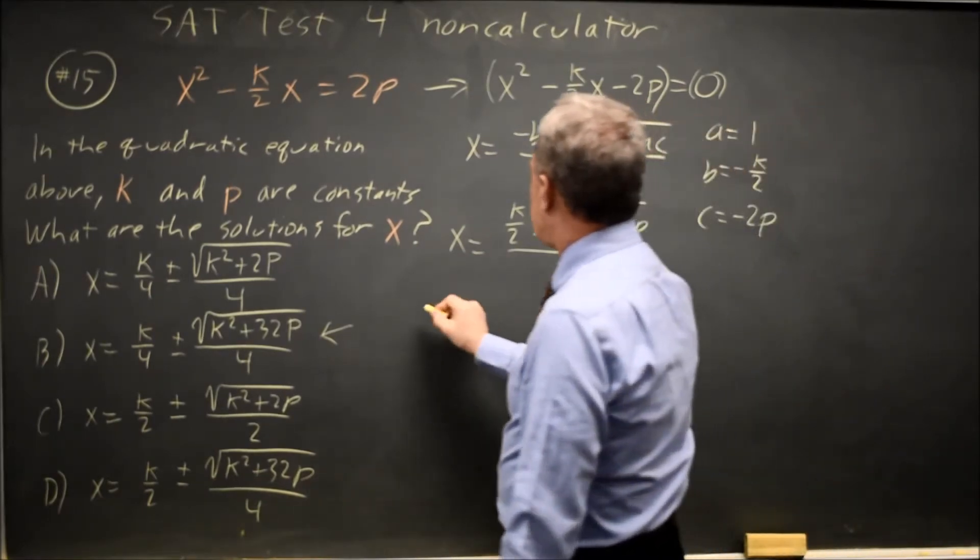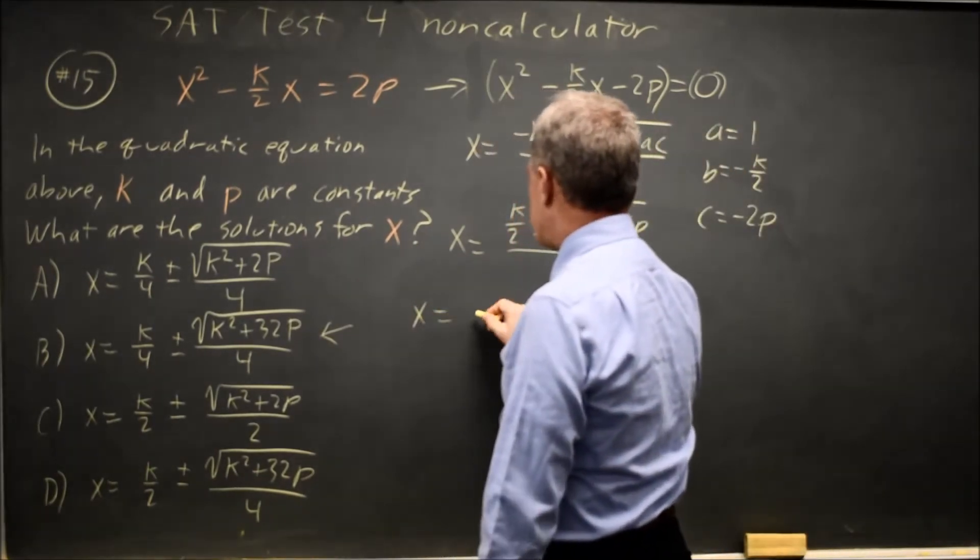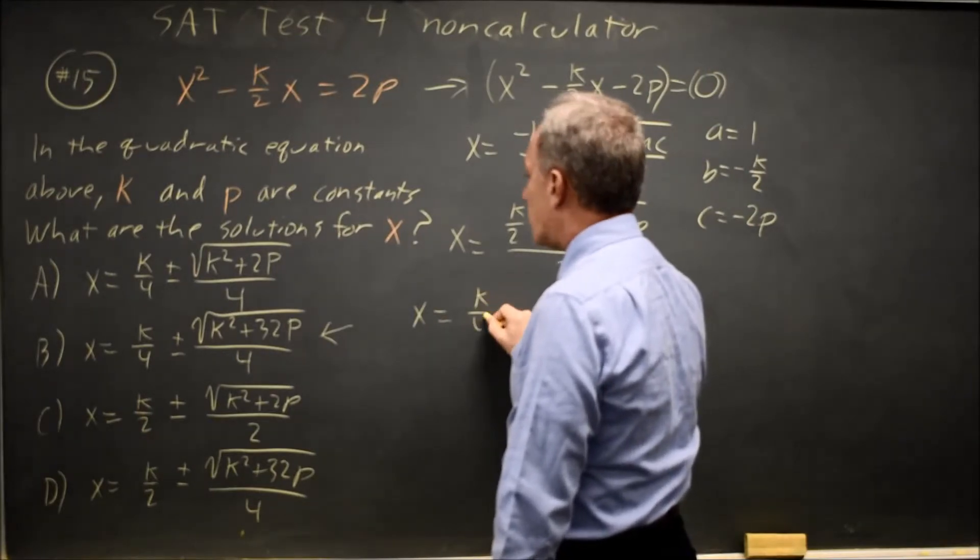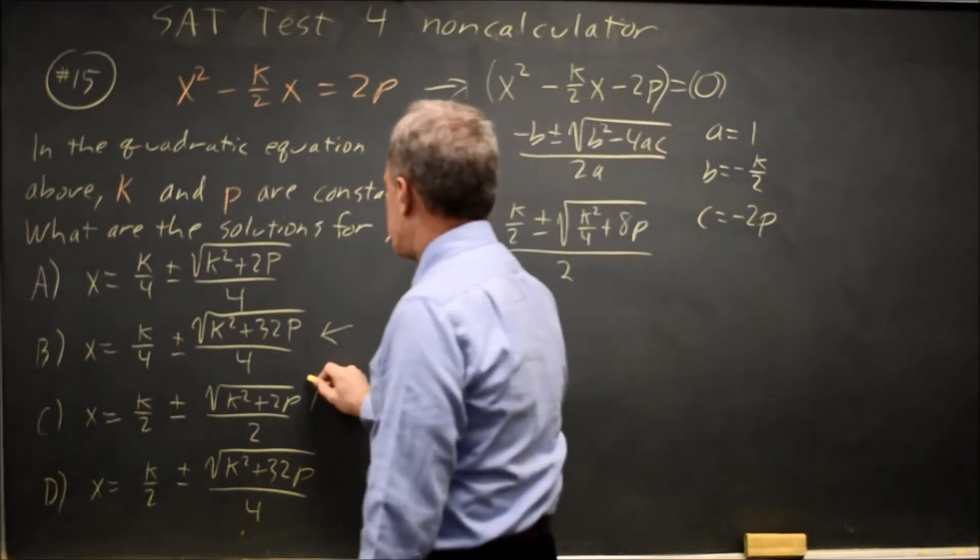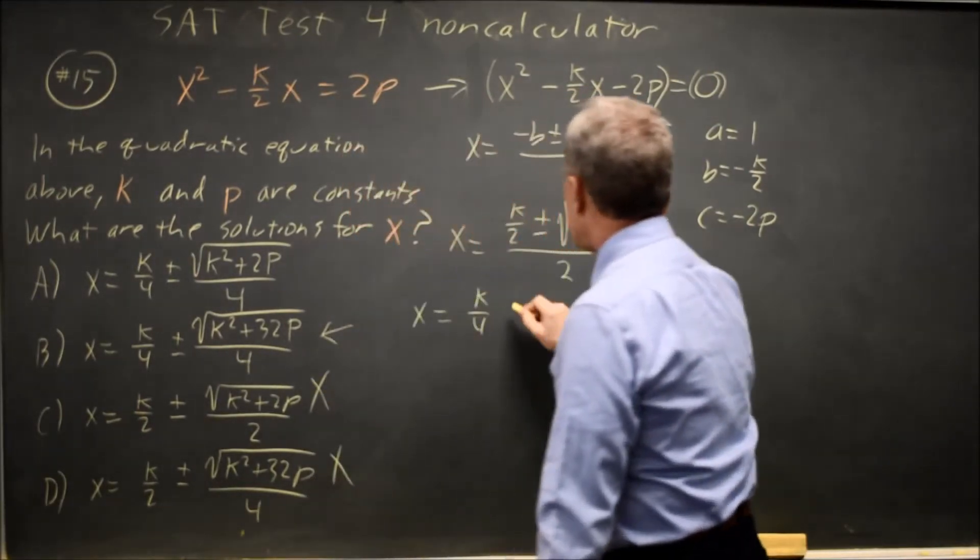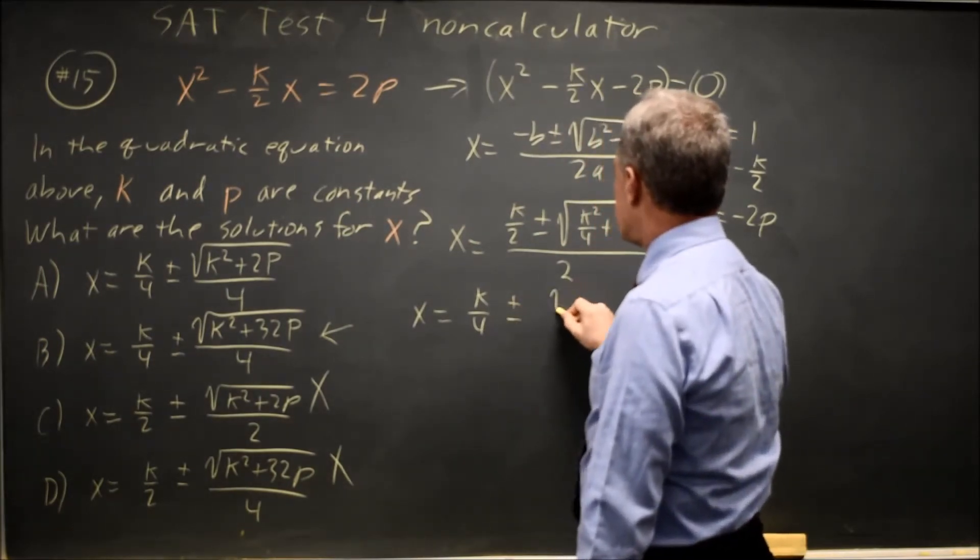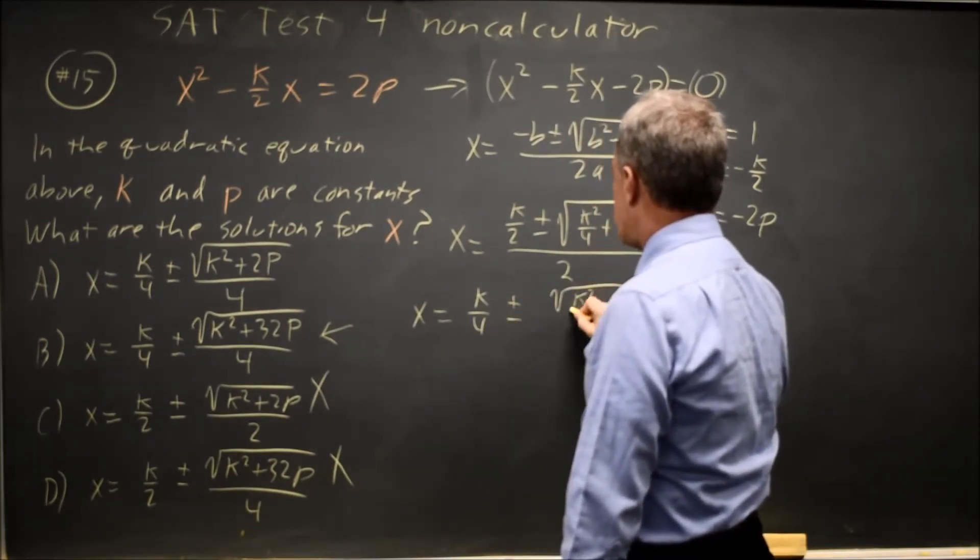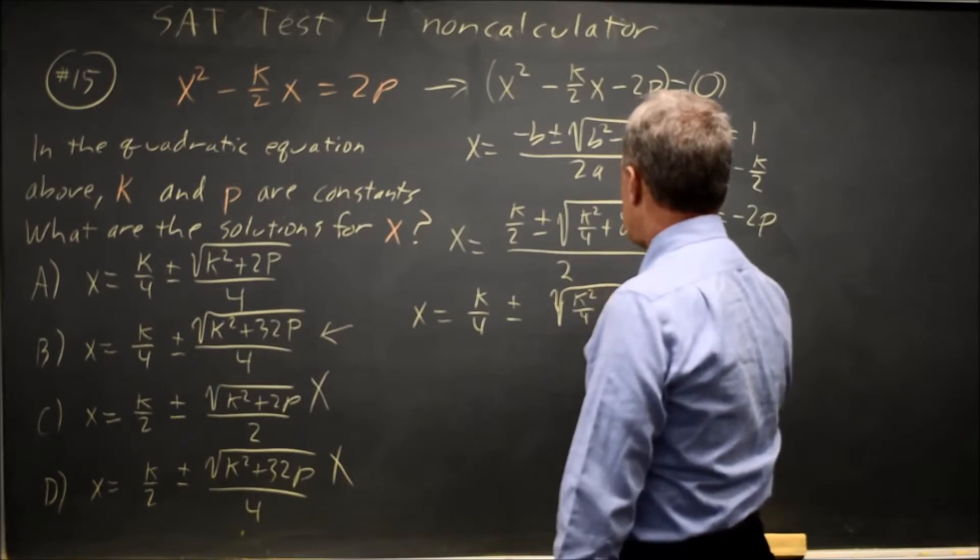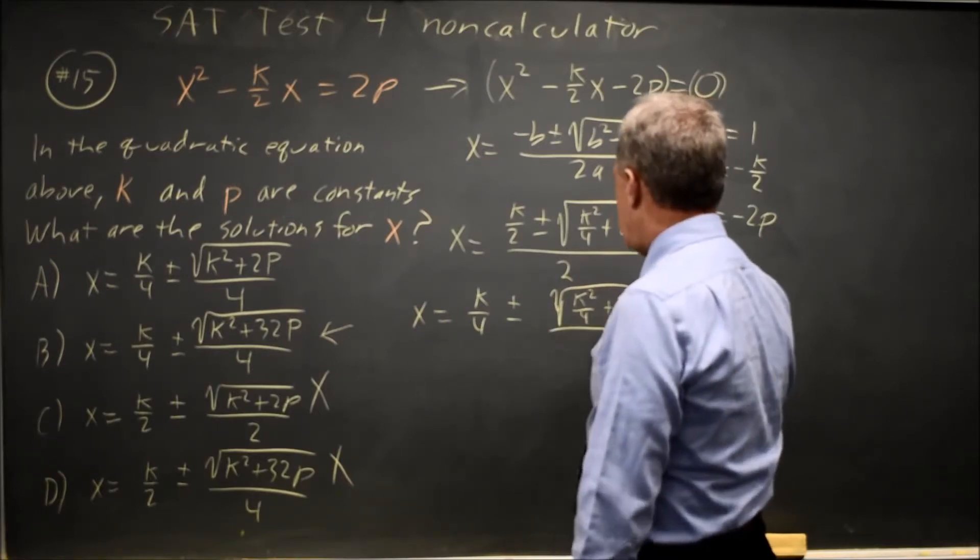Let's separate the two terms. x equals k over 2 divided by 2 is k over 4. That rules out choices c and d, and then plus or minus this square root: k squared over 4 plus 8p all over 2.